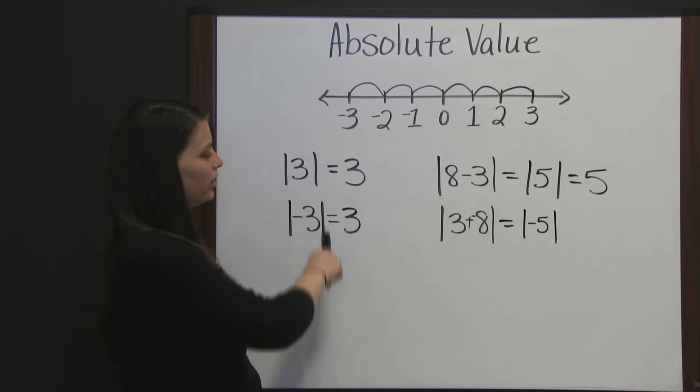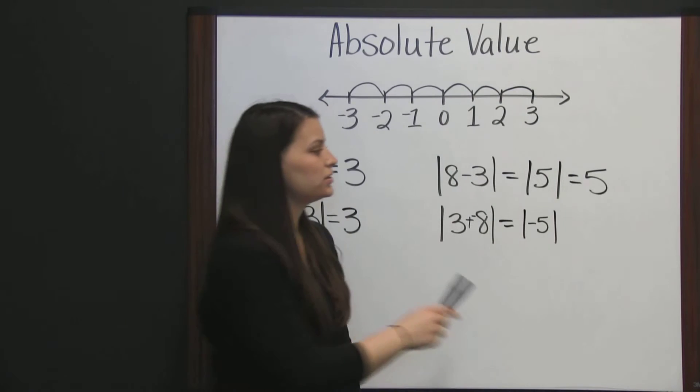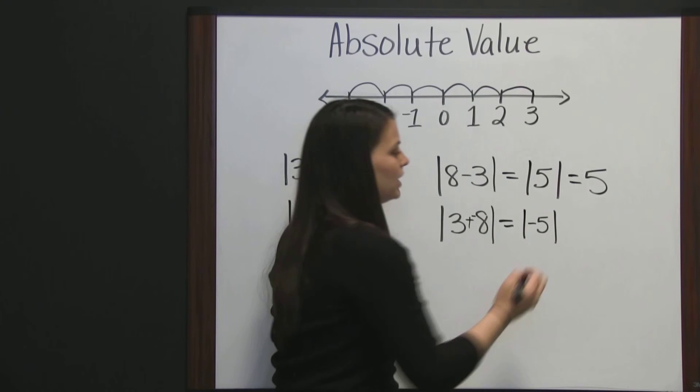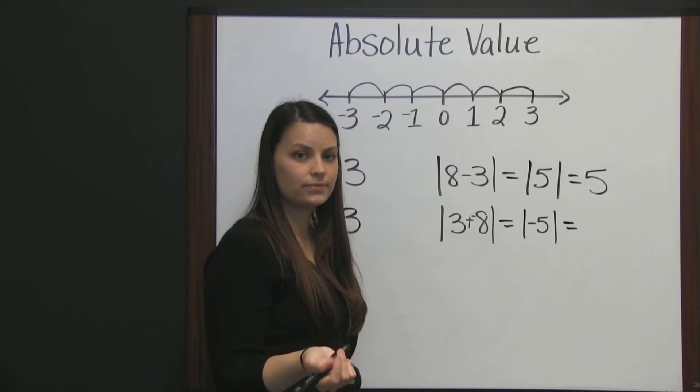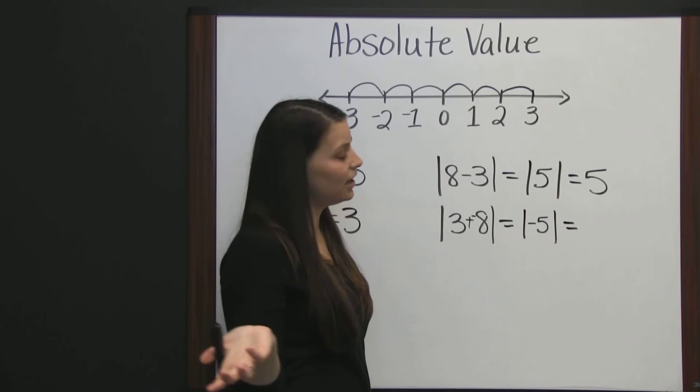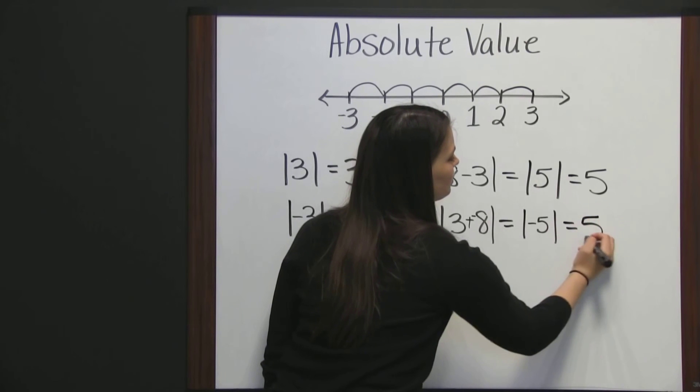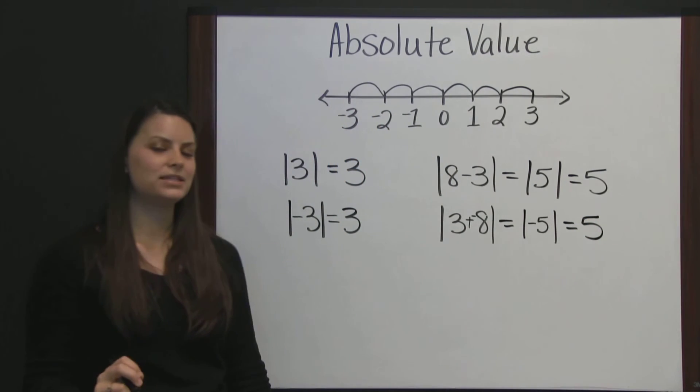And, like we talked about over here, the absolute value of a number and its negative counterpart are the same. So, the absolute value of five and negative five is the same, because again, absolute value is the distance from zero, and distance can never be negative. So, the absolute value of negative five is also five, since negative five is five places from zero.